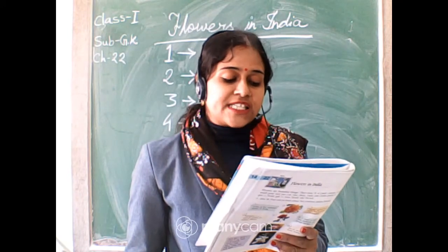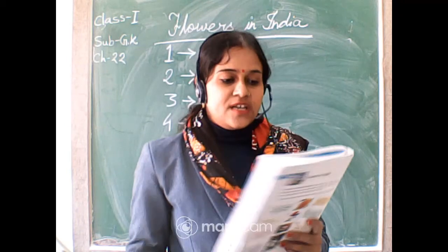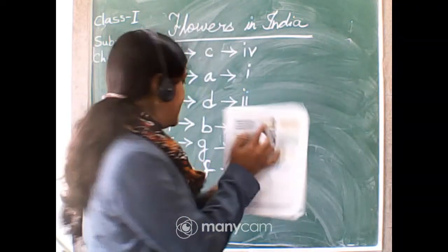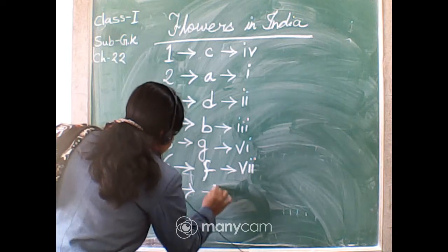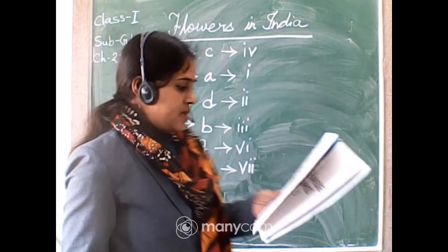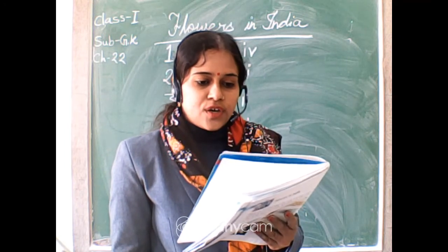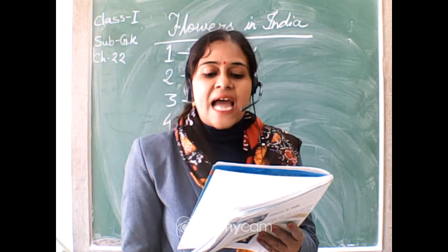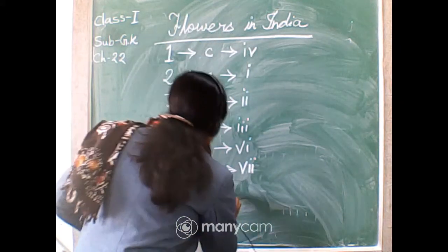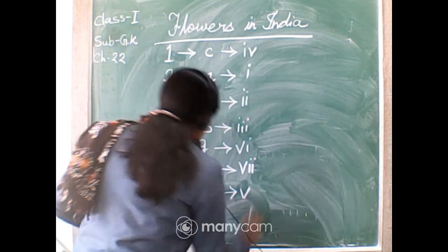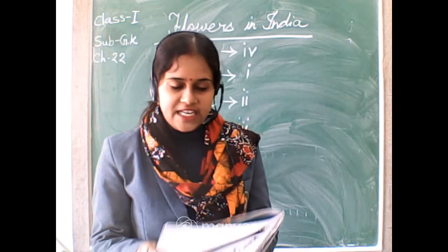Number seven: Tuberose is a white flower with a long stem. Its picture is E, so number seven joins picture E with number five. Tuberose blooms at night and has a lovely scent.